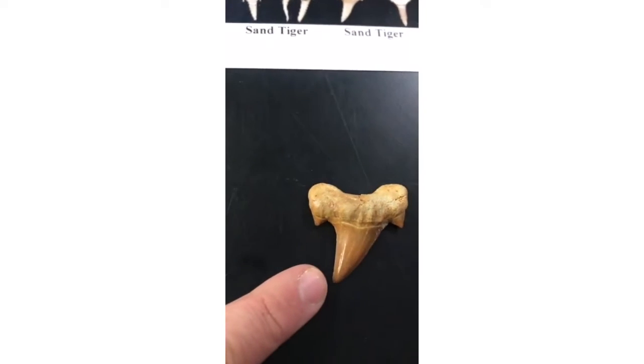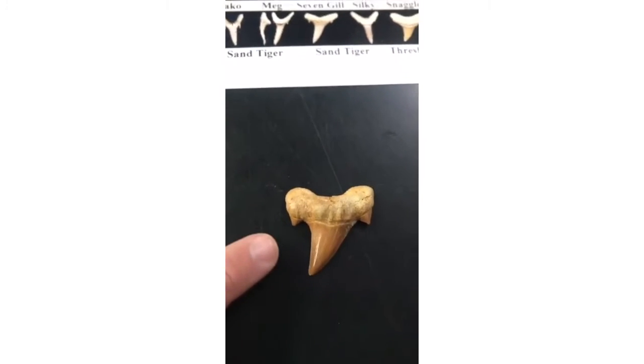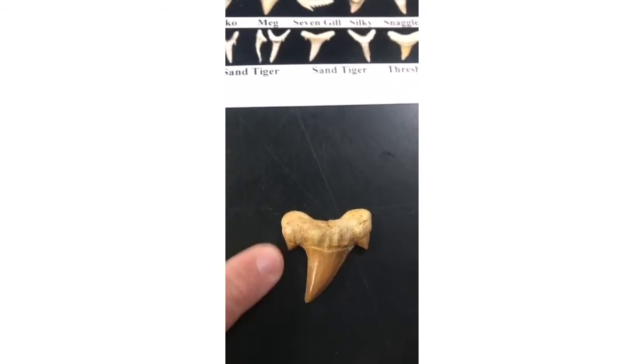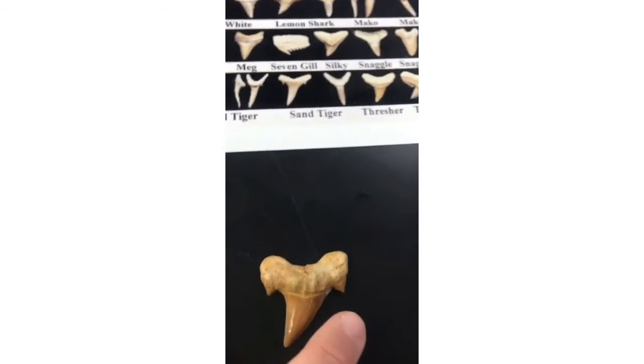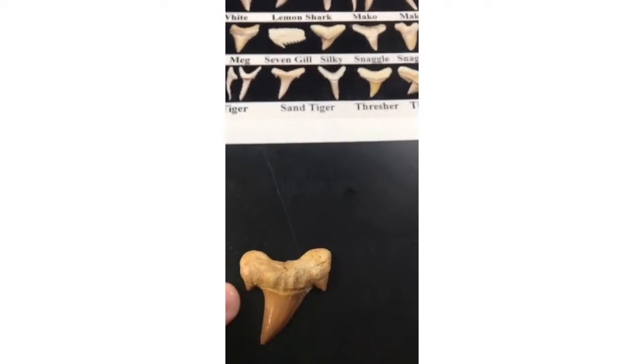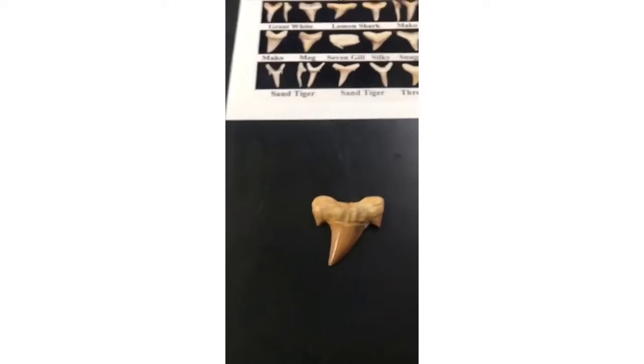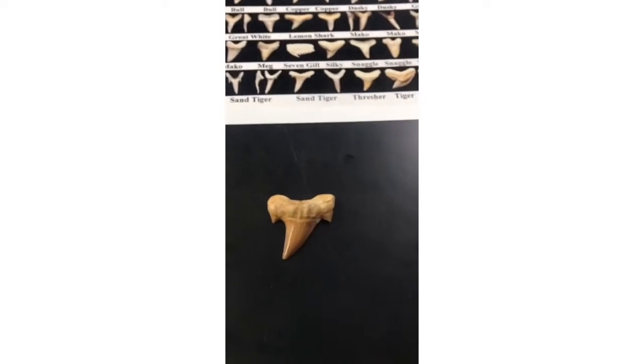The tooth of this shark is large with a triangular crown — this is the crown — smooth cutting edges, and visible cusps at the roots. These are the cusps.